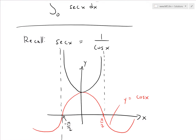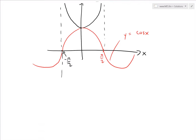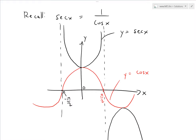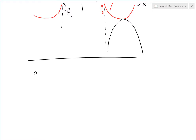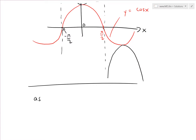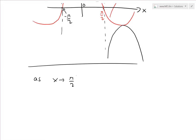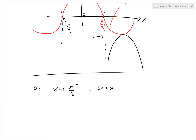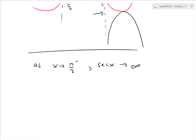So basically the function goes to infinity here — this is y equals secant of x. Since we're only dealing with from 0 to π/2 we'll focus on that portion. As we approach π/2, so as x approaches π/2 from the left side, the function secant of x is basically approaching infinity. That's a vertical asymptote line, and it's a type 2 improper integral asymptote.